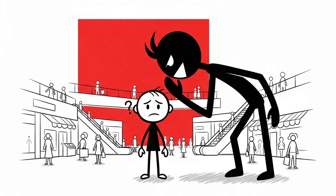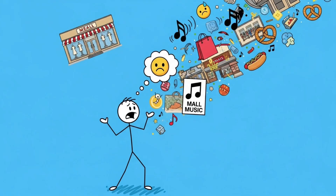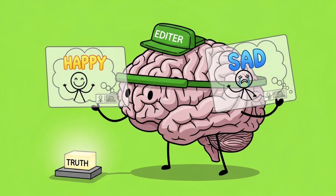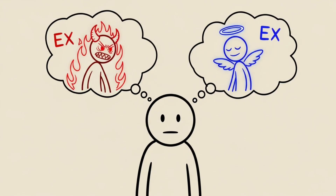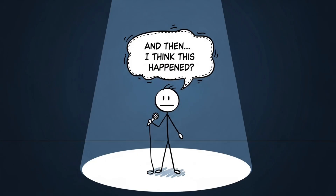There's a famous experiment where researchers convinced people they were lost in a mall as a child. Spoiler: none of them actually were. But after enough prompting, they started remembering the fake event vividly, describing details, sounds, and feelings that didn't exist. Your brain isn't trying to lie to you — it's just trying to make sense of chaos. It edits memories for emotional consistency, not truth. That's why you might remember your ex being worse than they were — or, horrifyingly, better. Basically, your memory is less of a filing cabinet and more of a creative writing workshop that keeps revising history until you believe the latest draft. So yeah, you might be the unreliable narrator in your own life story.